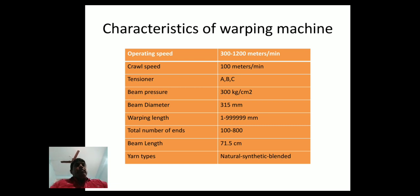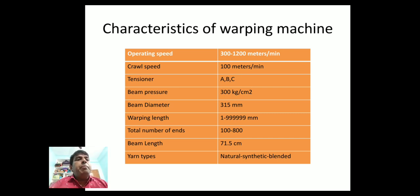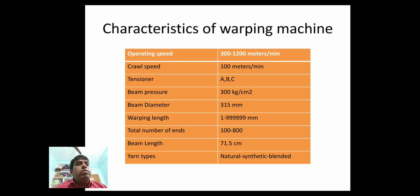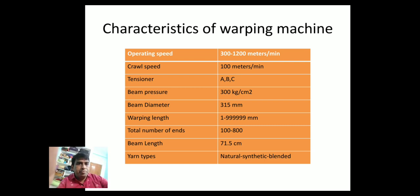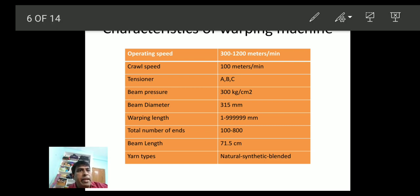Beam pressure 300 kg per centimeter square, beam diameter 315 mm, warping length up to 999,999 meters, total number of ends 100 to 800, beam length 71.5 centimeters, yarn types: natural, synthetic, and blended.